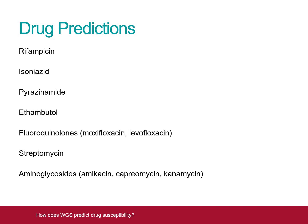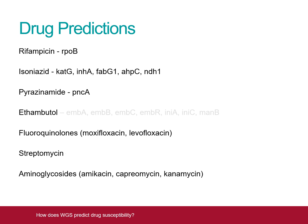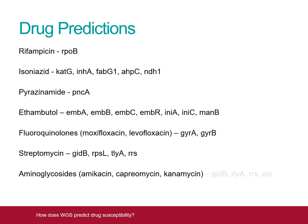This is done by looking for alterations, or mutations, in the genes which are known to be important to the action of each individual drug. In some cases, such as for rifampicin, there is only one main important gene. For others, there are several.